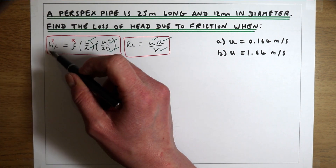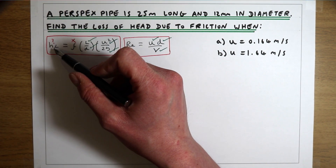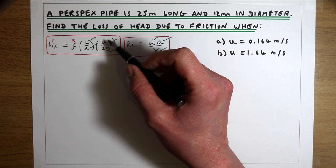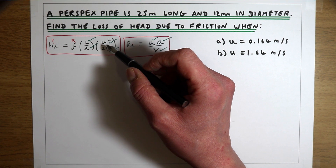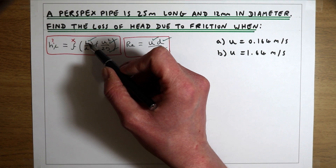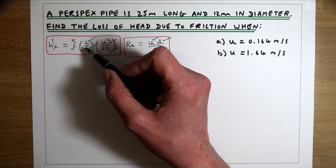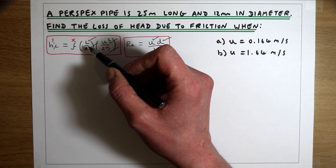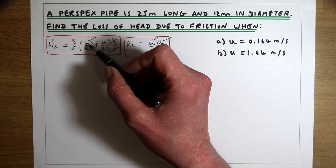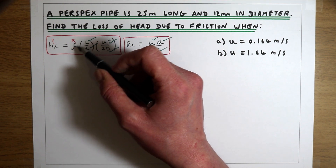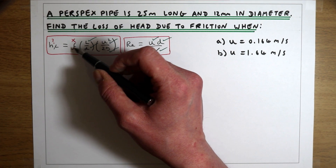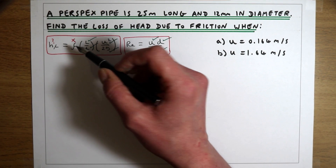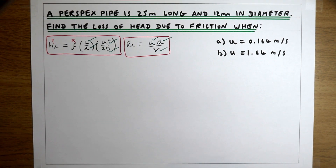The total loss of head is going to go up as velocity goes up, because as velocity increases we get more friction, so more head loss. It's going to go up as the length of the pipe goes up, because the longer the pipe, the more resistance we have due to friction. It's also going to go up as the friction factor goes up, which is based on the characteristics of the pipe.